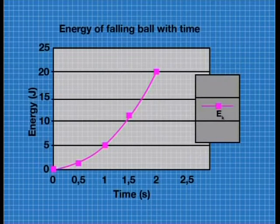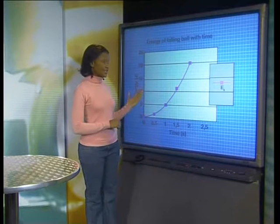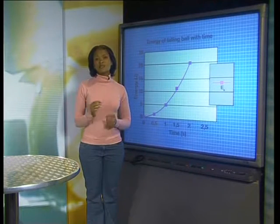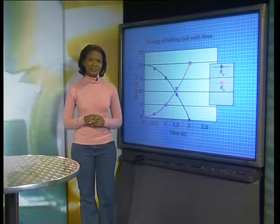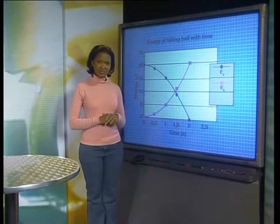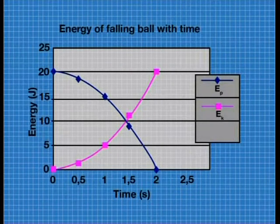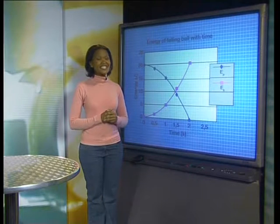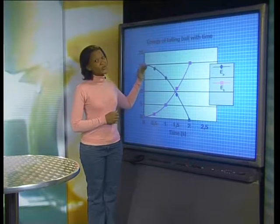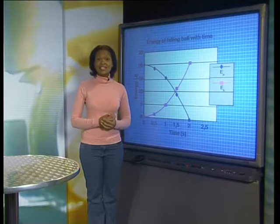What type of line graph do you expect for the kinetic energy of the ball? Well, the graph shows that the kinetic energy is increasing with time. Notice how the gradient of this line increases — this is not a linear relationship. This looks similar to the relationship between gravitational potential energy and time. Let's compare these graphs by placing them on the same axis. Notice how these graphs have the same shape — they both look like part of a parabola. But notice the directions of the curves are different. The gravitational potential energy decreases from 20 joules to 0 joules in 2 seconds, while the kinetic energy increases from 0 to 20 joules after 2 seconds.